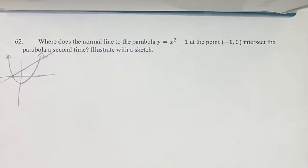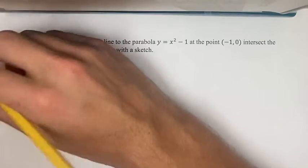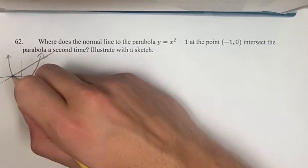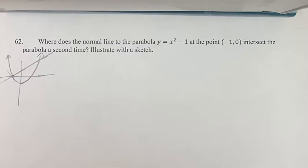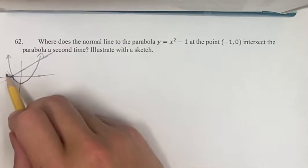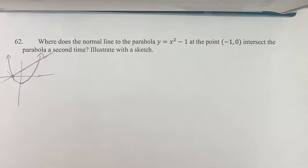So how do we find that? First we have to start with the derivative because then if we can find the derivative we can find the slope of the tangent line at that point, and from the slope of the tangent line, because we know it's perpendicular to the normal line, from that we can find the slope of the normal line.